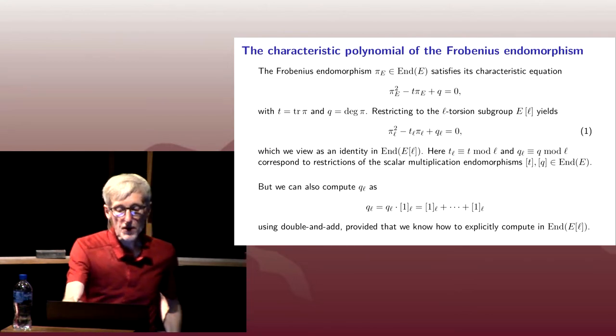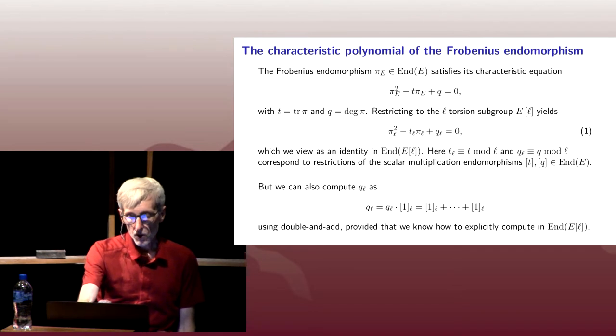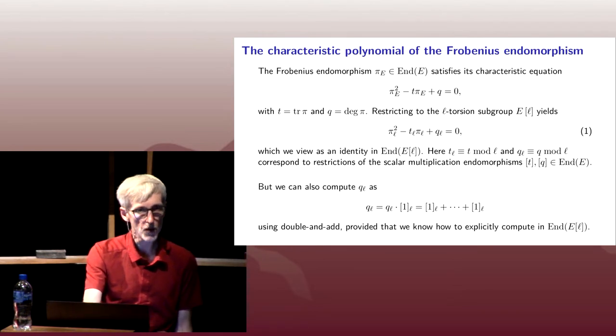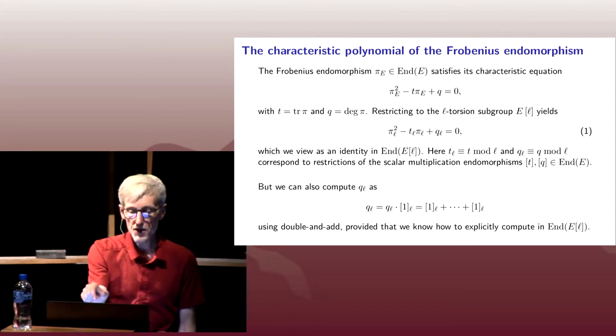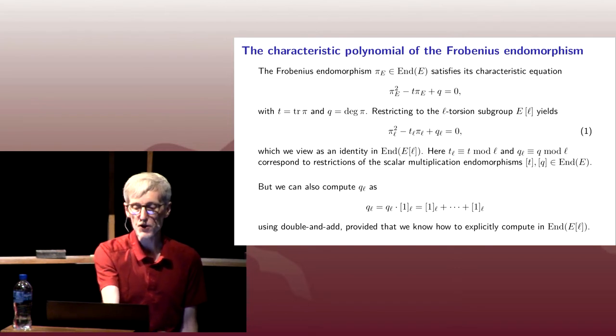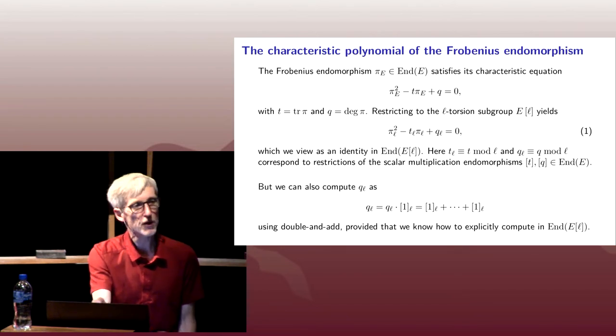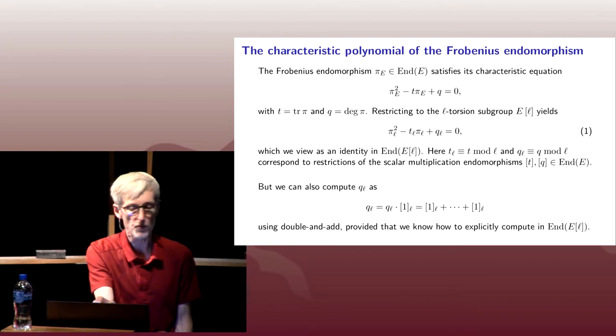So we want to now interpret this characteristic equation of Frobenius. I've now replaced the Es with little sub-ls to indicate that I'm taking all of these endomorphisms and restricting them to the l-torsion. And I should note, even in the top equation, that's an equation in the endomorphism ring.